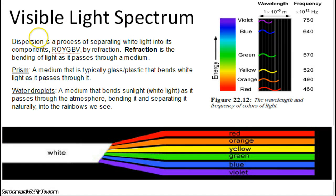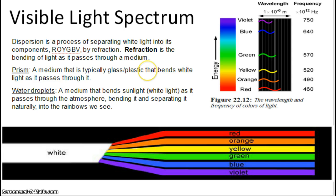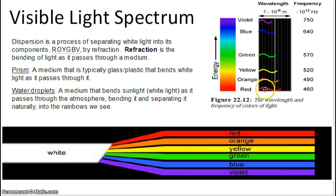It comes down to the visible light spectrum. Dispersion is a process of separating white light into its components — Roy G. Biv — and we've covered this topic numerous times. Refraction is the process of bending light as it passes through a medium. A prism is a medium that is typically either glass or plastic, and it bends white light as it passes through it, separating that white light based on particular wavelengths, which are different frequencies of visible light within the electromagnetic spectrum.